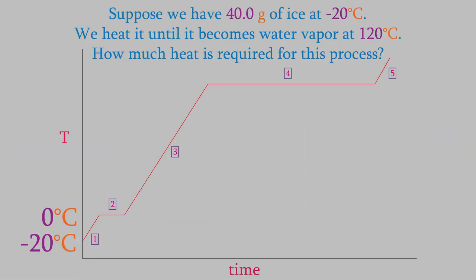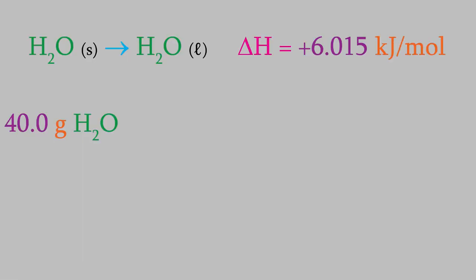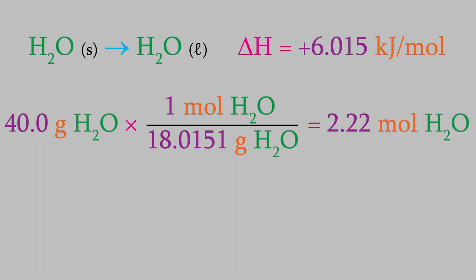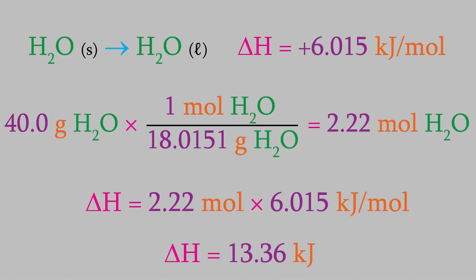Okay, now on to the second part of our heating curve. This flat area is where we melt the ice. We actually already know the enthalpy of this step. It's the enthalpy of this reaction, which is 6.015 kilojoules per mole. All we need to do is figure out how many moles we have. We have 40.0 grams, and if we used a periodic table, we find out that that's 2.22 moles of water. So that gives us 13.36 kilojoules for the enthalpy.